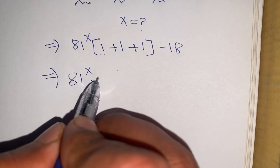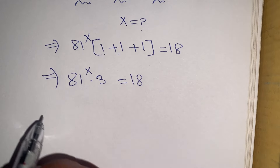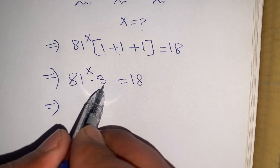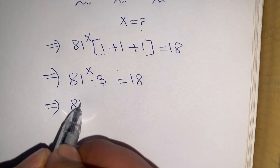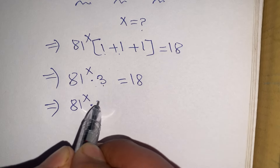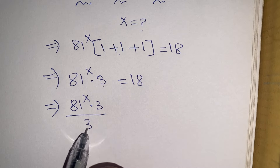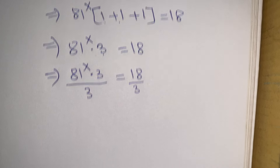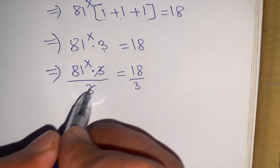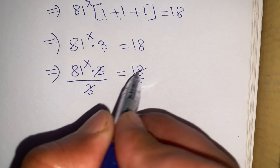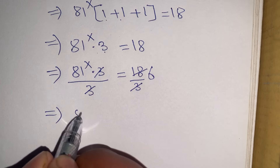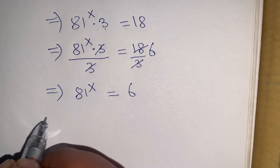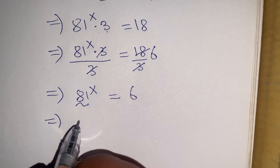In the next step, 1 plus 1 is 2, and 2 plus 1 is 3. So we have 81 to the power x times 3 equals 18. Dividing both sides by 3, we get 81 to the power x equals 6, since 18 divided by 3 is 6.